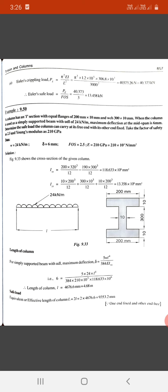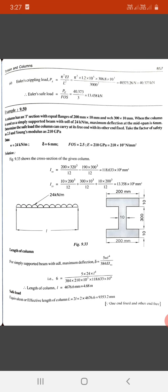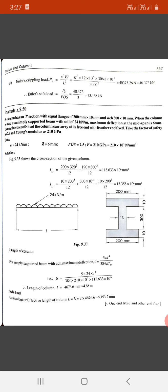Figure 9.33 shows cross-section of given column. Ixx is calculated as 200 times 320 cubed divided by 12, minus 190 times 300 cubed divided by 12, that equals 118.633 times 10 raised to 6 mm raised to 4.